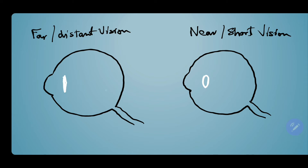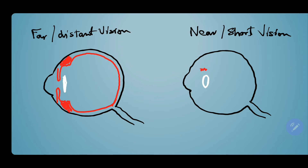Now I'll draw the choroid and the ciliary body. The ciliary body is an extension of the choroid on both sides, made up of ciliary muscle, and it continues anteriorly in the form of the iris. You can see the difference: in near vision the ciliary body has come closer to the eye lens, and the eye lens itself has also decreased its diameter.